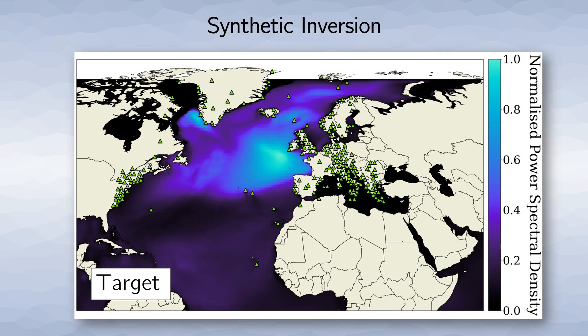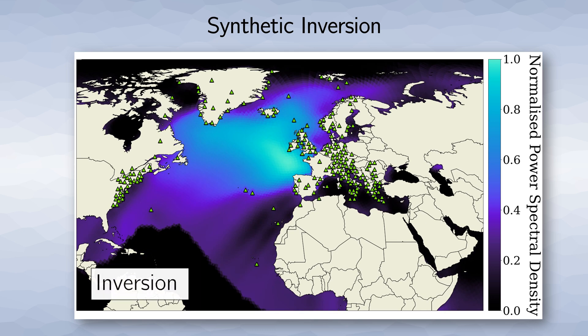Let's have a look at a synthetic test for multiple station pairs, shown by the green triangles here. We use the target model shown here to forward model observed cross correlations, for which we then try to invert. After performing 10 iterations of our inversion scheme, we obtain this noise distribution map. As we can see, all the dominant noise sources in the North Atlantic, specifically the one off the coast of Europe, are contained in the inversion model.